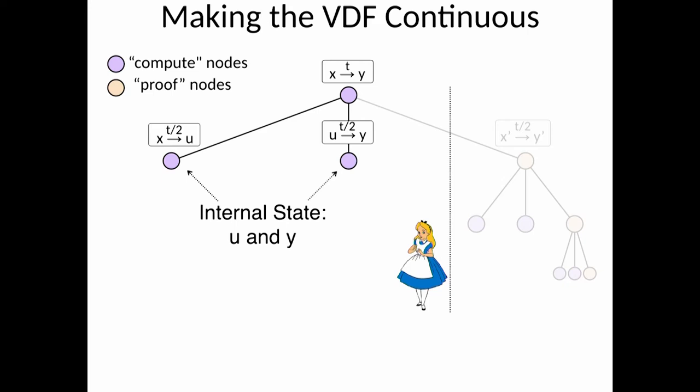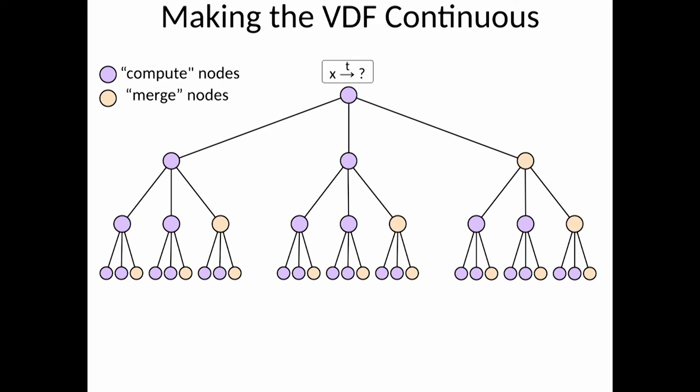So the internal states, u and y, are not verifiable at this point where Ali stands. So our solution is actually to make this a full tree instead of a very unbalanced tree. So every node is going to correspond to a small Pietrzak proof.